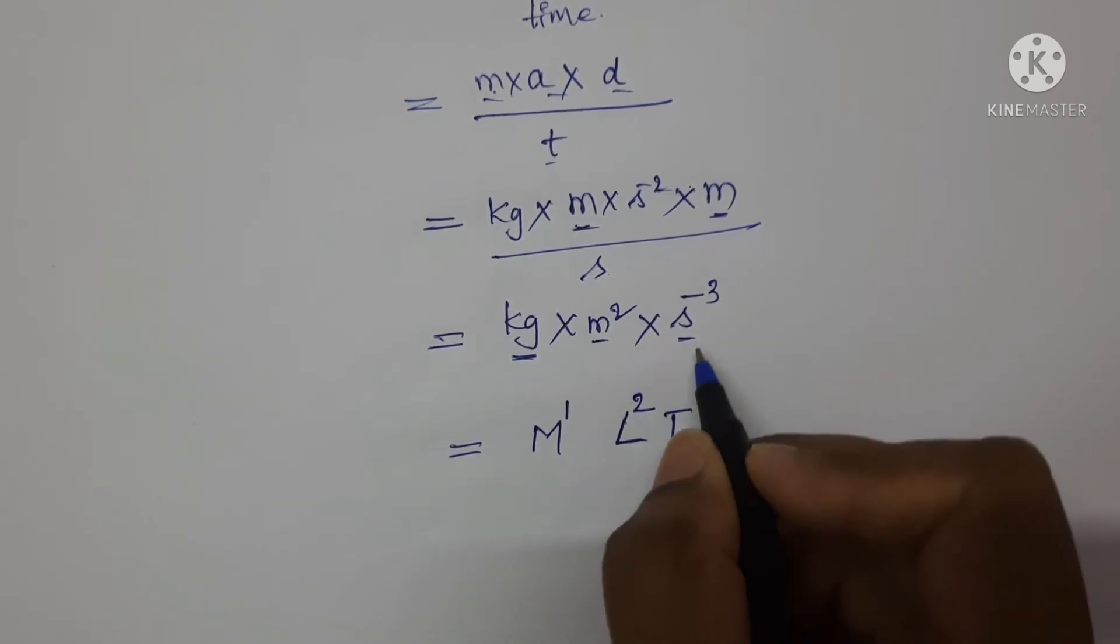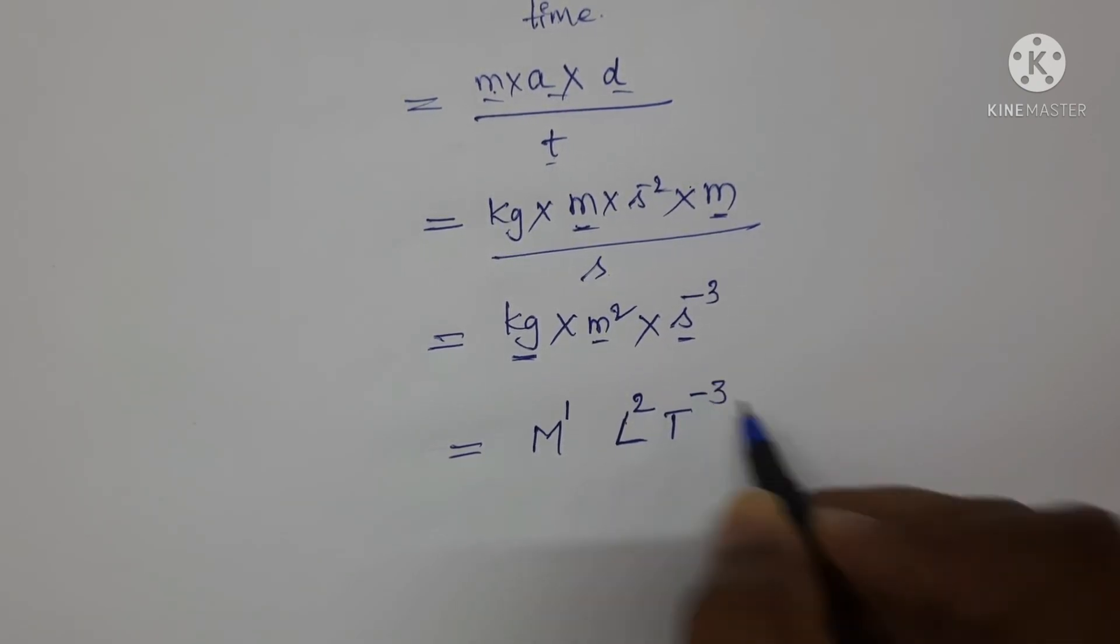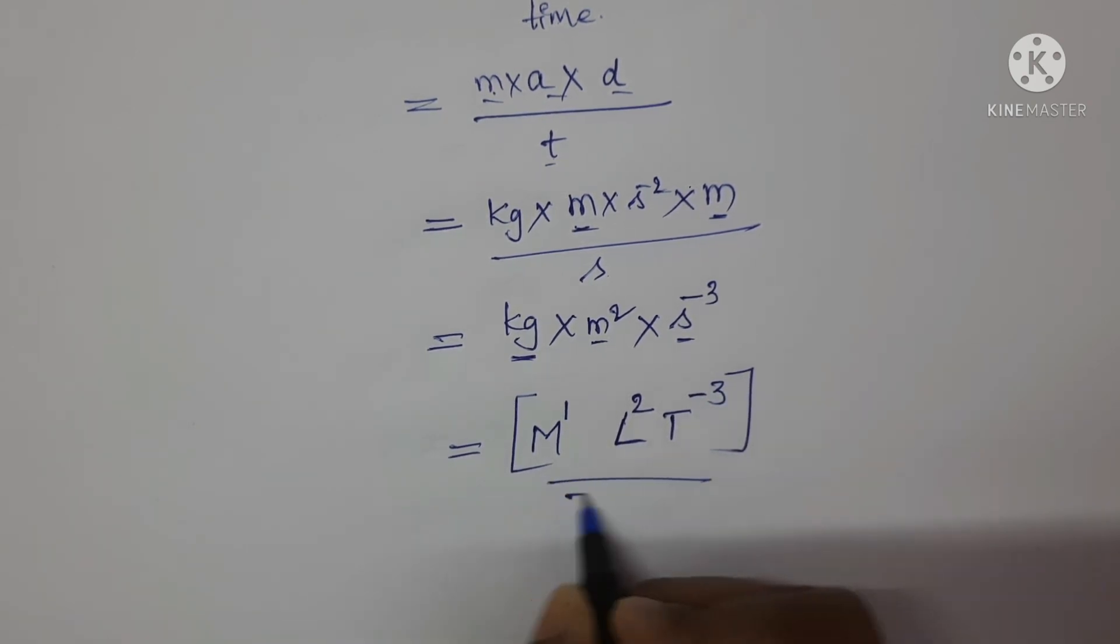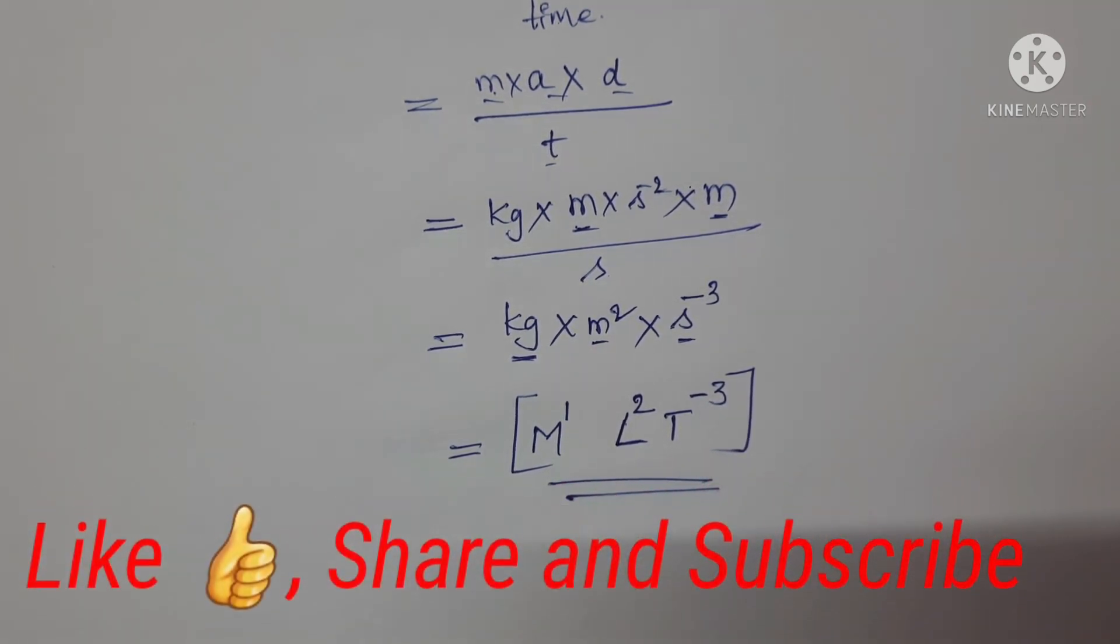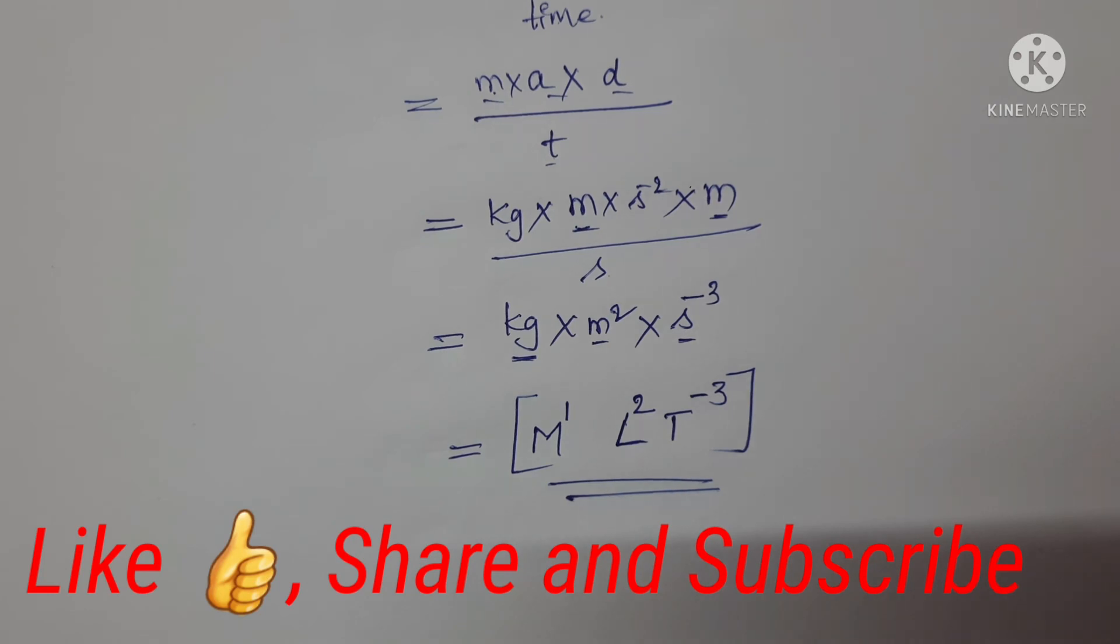T power minus 3. This is the dimensional formula for power. If you like the video, please do like, share, and subscribe. Thank you for watching this video.